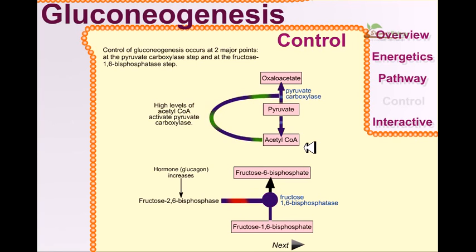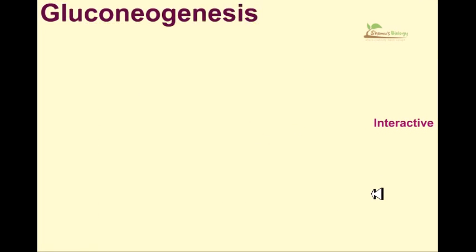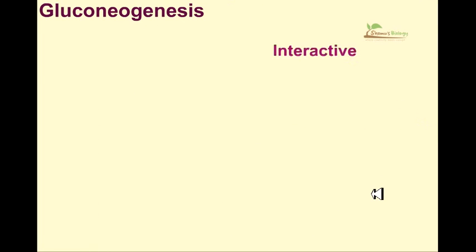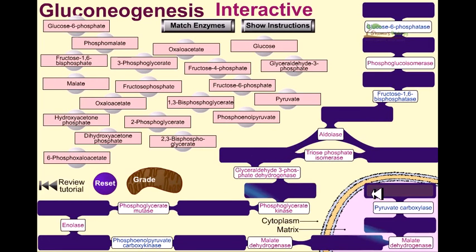High acetyl-CoA will activate the pyruvate carboxylase enzyme, pushing the reaction towards oxaloacetate from pyruvate. So these two are the major regulatory steps of gluconeogenesis.